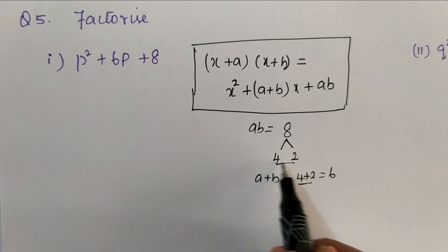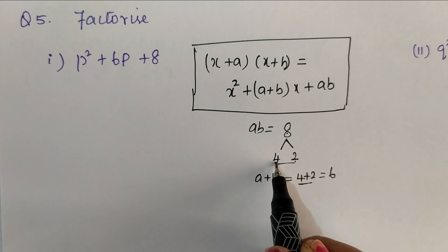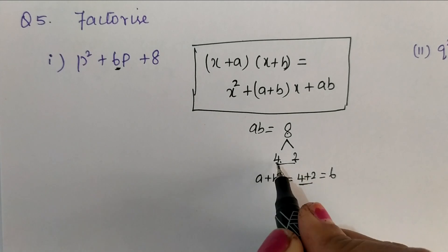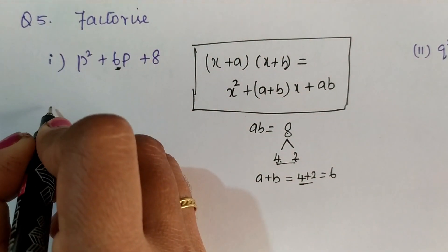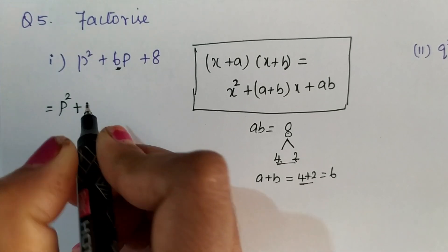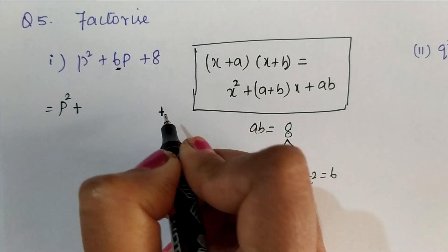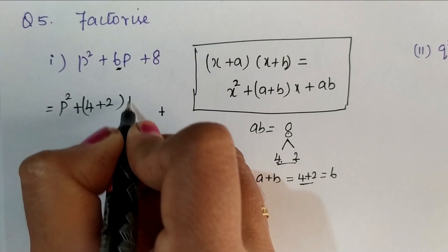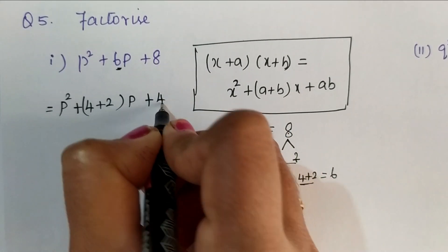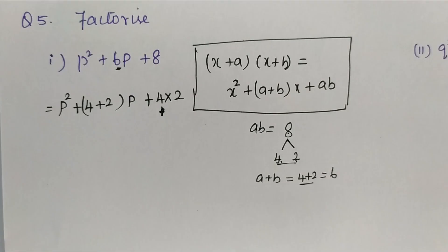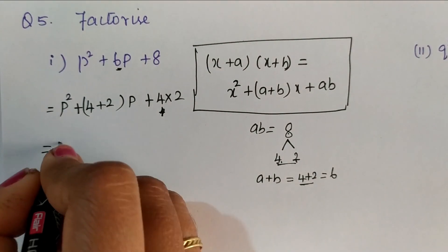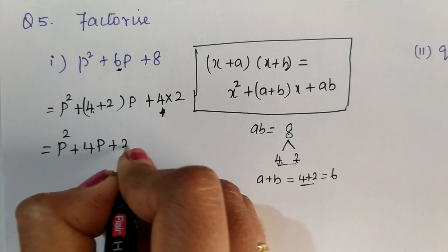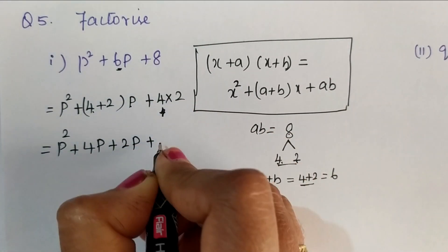When you multiply these two factors we should get 8, and when you add these two we should get the middle term. So the factors are 4 and 2. I can write p square plus 4p plus 2p plus 8, which equals p square plus 4p plus 2p plus 8.